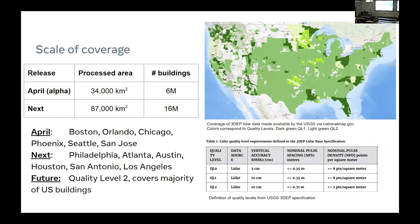The USGS LiDAR coverage is patchwork — not a coordinated campaign but targets of opportunity. The color coding corresponds to quality levels, a USGS spec, reflecting that some states and municipalities pay more for higher quality LiDAR. We're focusing on QL1 and QL2 — the light greens and dark greens — which covers the vast majority of the US population and buildings.